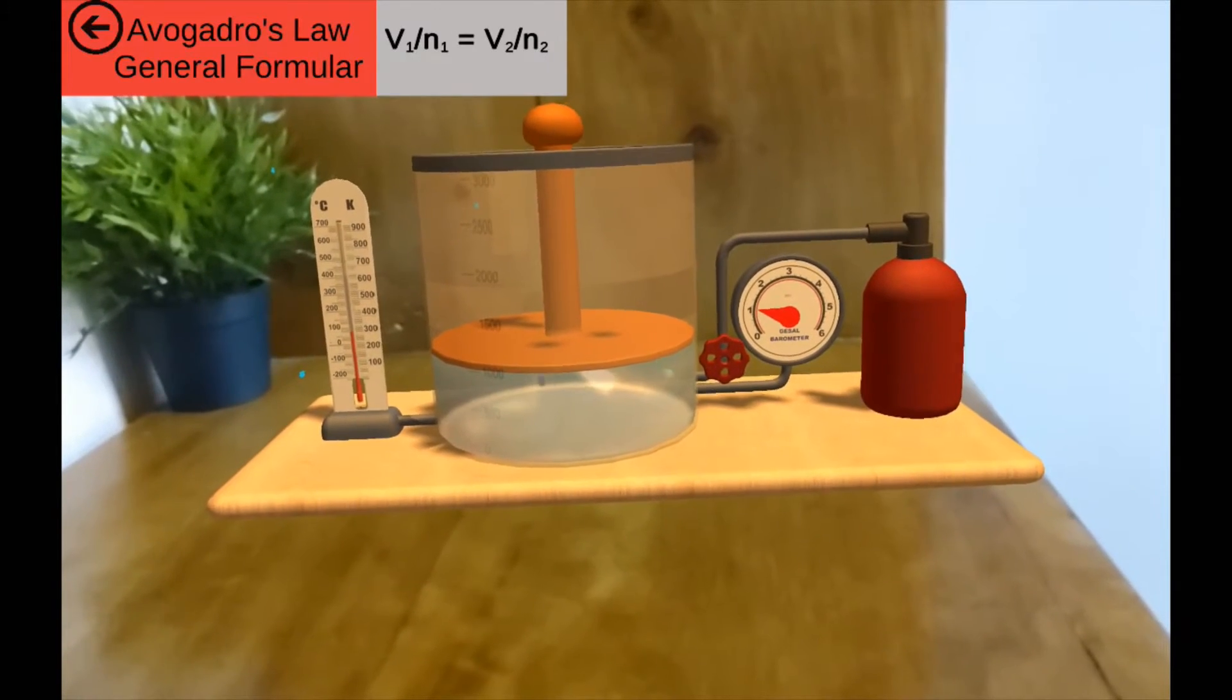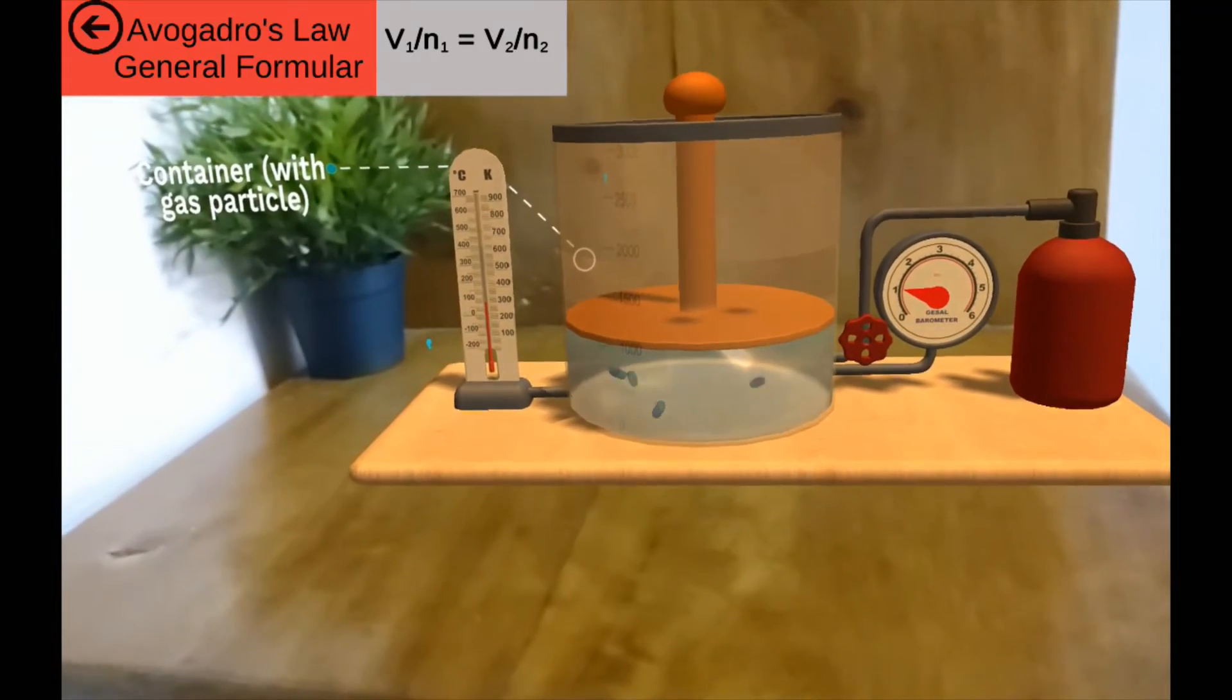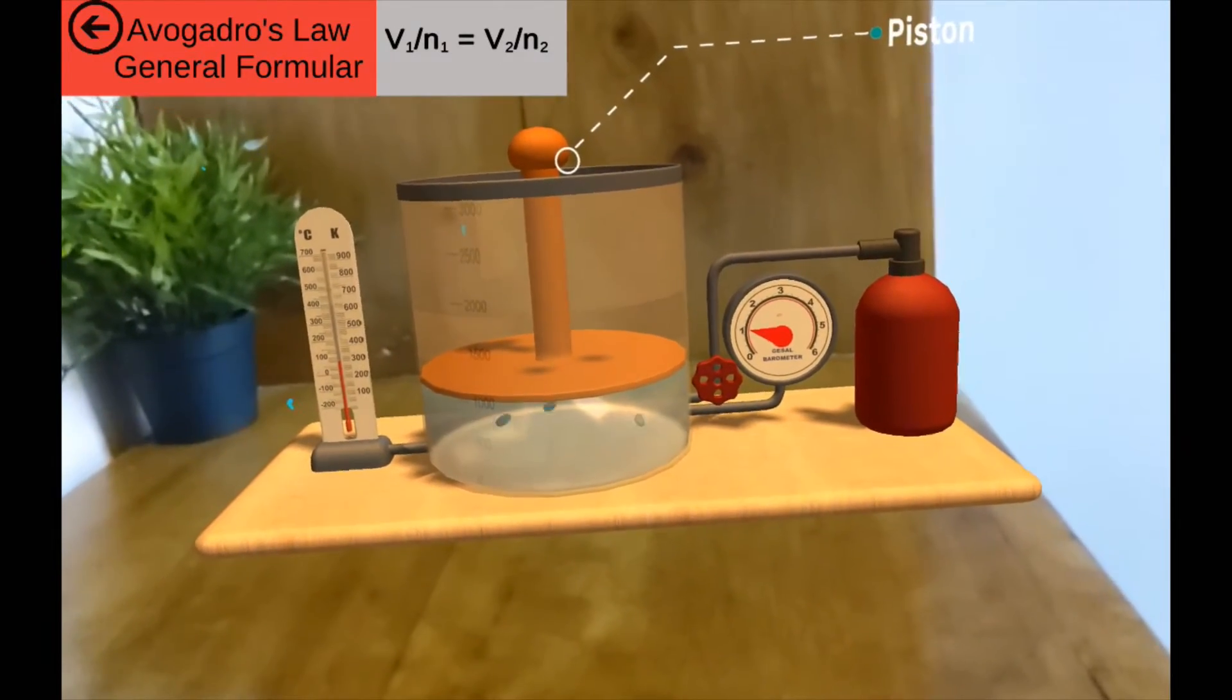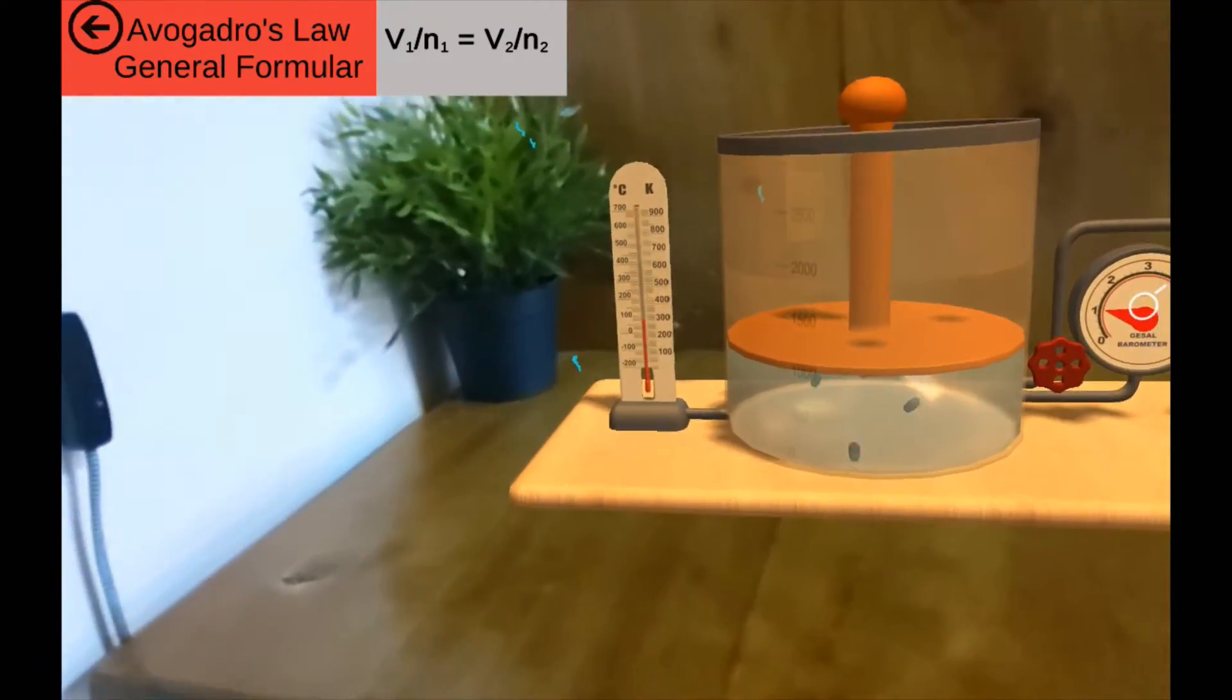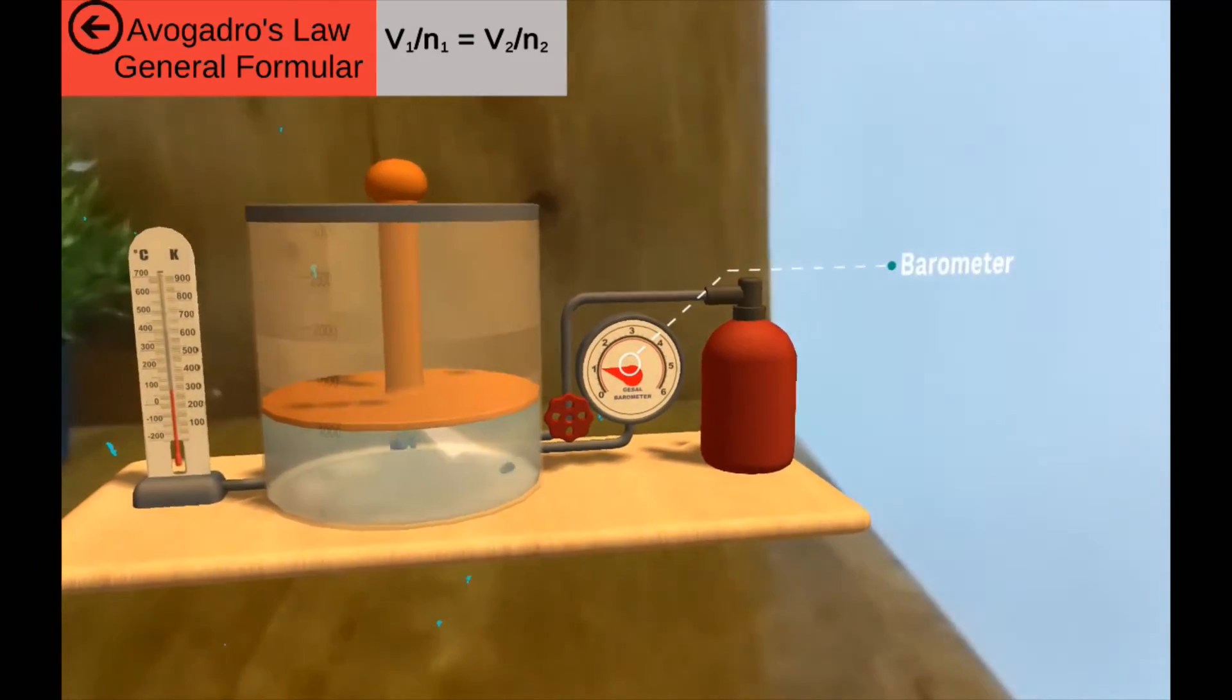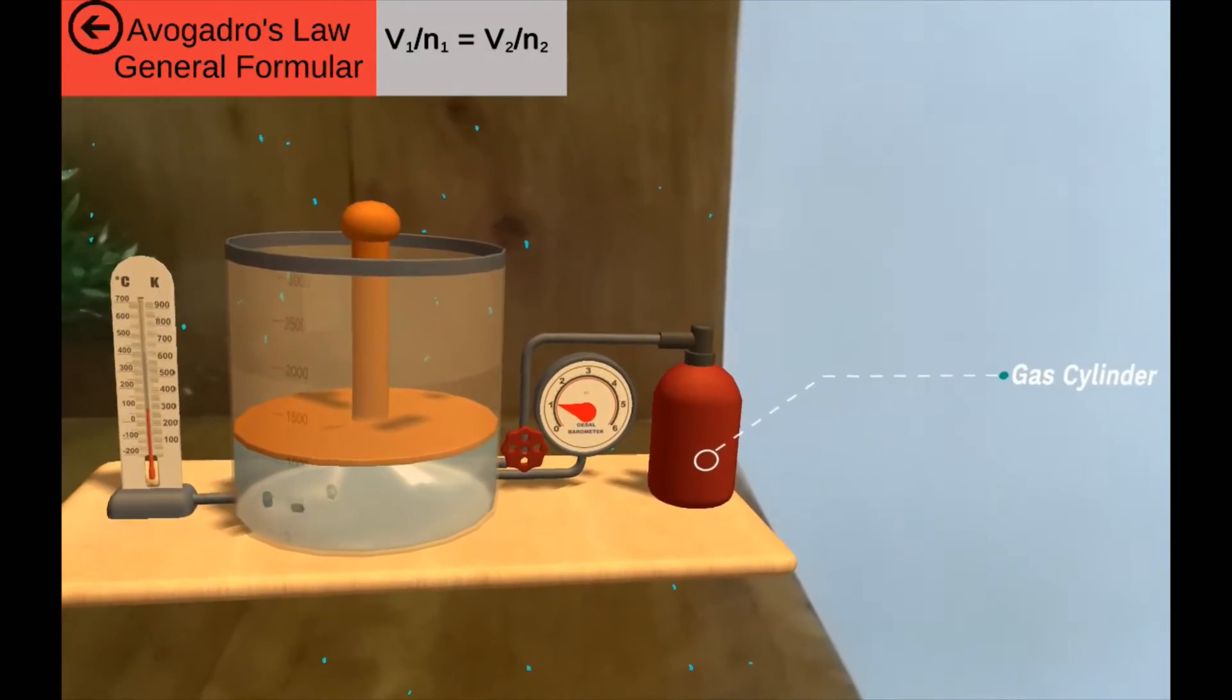Let's dive into our animation to understand this a bit more, shall we? Firstly, there is a container with a movable piston which allows us to vary our volume. Next we see our thermometer which measures the temperature and the barometer which measures the pressure. Finally, we have one more thing that looks a bit unfamiliar. It's our gas cylinder. It'll help us pumping more gas particles inside the container.